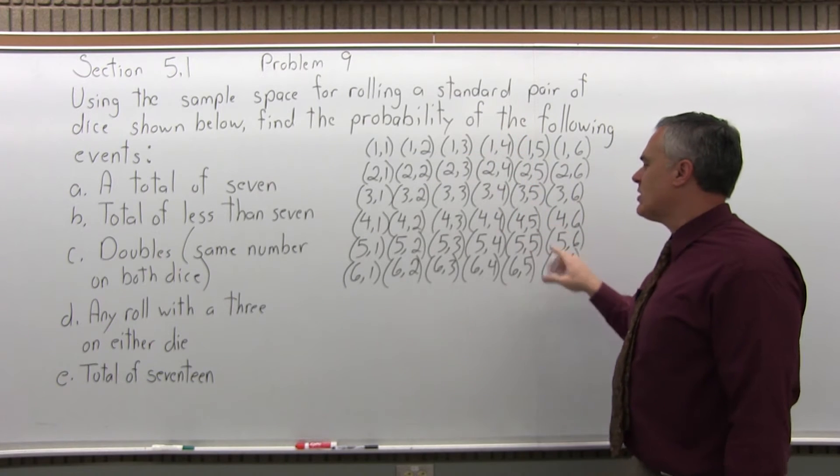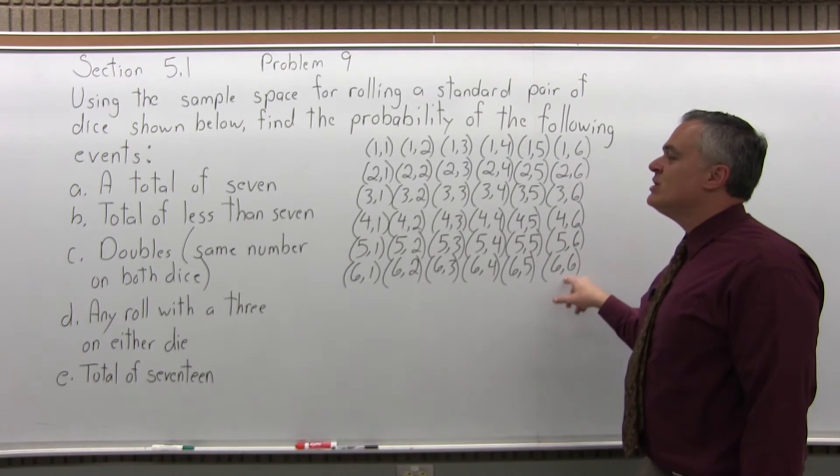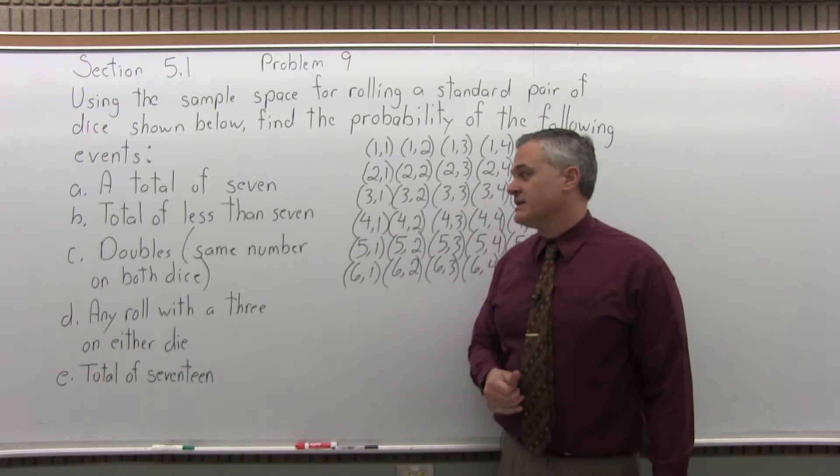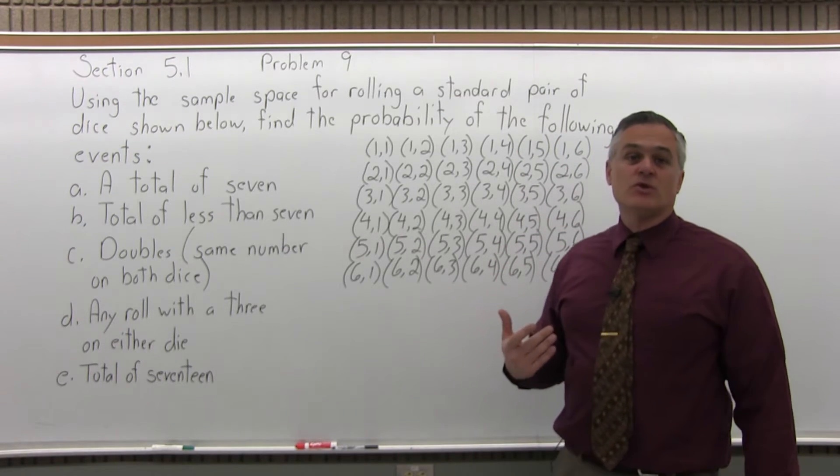1,1, 1,2, etc., all the way up to 6,6. So there's 36 rolls all together you can roll when you roll a pair of dice. How many of those give you a total of seven?